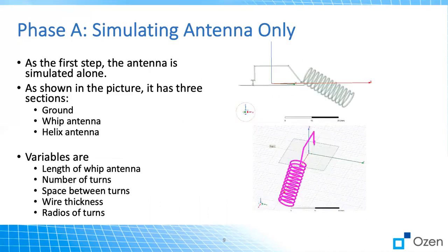So let's talk about simulating the antenna only. So at the very first step, we have the antenna here and it has the different parameters that you can change to tune the antenna. The main ones are length of the whip antenna which is this line here. The number of turns of the antenna, how many turns you have and the more turns, the longer the helix will be. So length of the helix antenna and turns are the same.